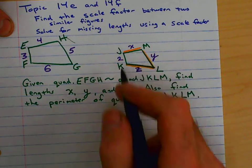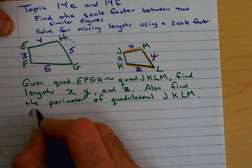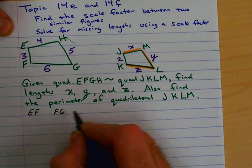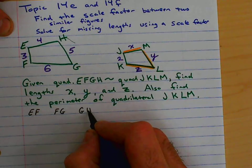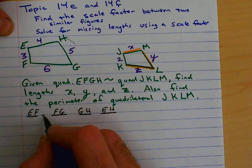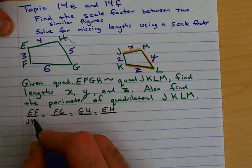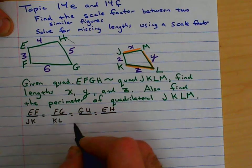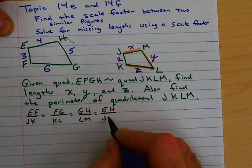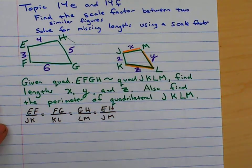So, at this point, I would like to go ahead and just using this similarity statement, I'm going to go ahead and say EF, FG, GH, and EH should be equal to JK, KL, LM, and JM. And once we've done that step, made that proportion, then we want to go ahead and start filling in information that we know.